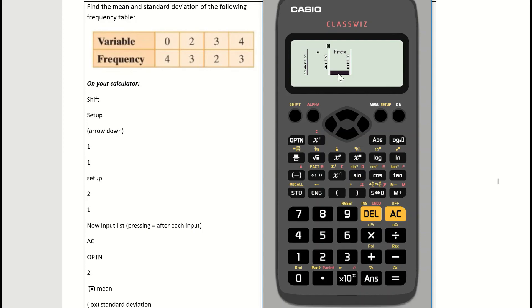Have a glance back at your table and you should see that the frequencies correspond to the variable: zero corresponds to four, two corresponds to three, three corresponds to two, and four corresponds to three. Once I'm happy with my table, I need to save that data.